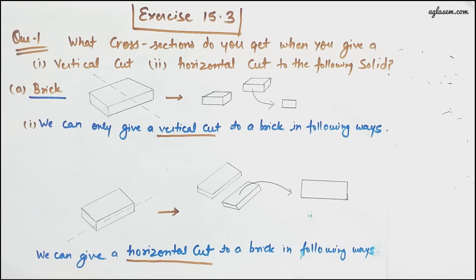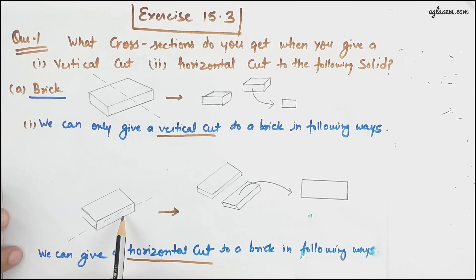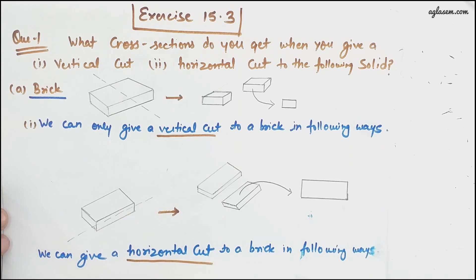First of all, a brick. If I give a vertical cut to a brick, it will come something like this - you get two bricks of about half the width. And if it is a horizontal cut, you will get maybe two cubes if it is equal, else it will be a smaller brick.